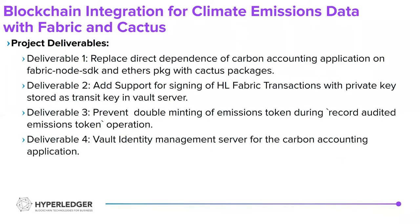These were my deliverables. The first was to replace the current dependency of Fabric node and Ether packages with Cactus packages. The second was to add support of Hyperledger transactions with private keys stored as a transient engine in Vault server. The third was to prevent double minting of emission tokens. And the fourth was to build a Vault identity management server for the carbon accounting application.